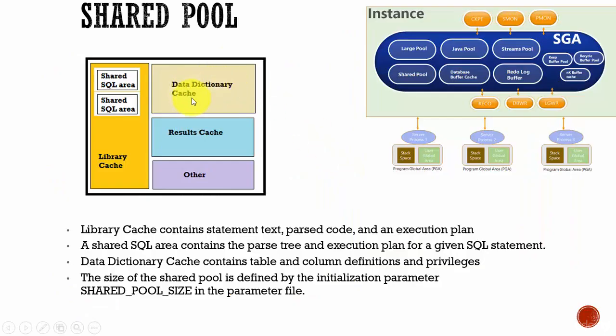The next one is your Data Dictionary Cache. This is another very important memory structure within the Shared Pool. We know what a data dictionary is — it is a collection of database tables and views which contain the metadata about the database, its structure, and the users present in the database. For example, what tables, views, and synonyms are in the database? What packages and functions are there? What is the code associated with these objects? What users are there and what objects they have access to? All the metadata-related information is stored in the data dictionary tables.